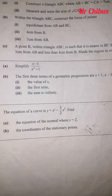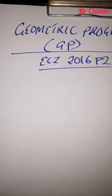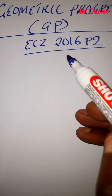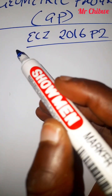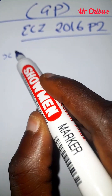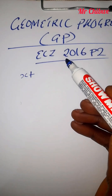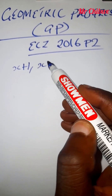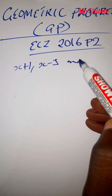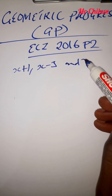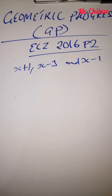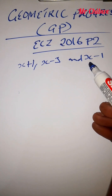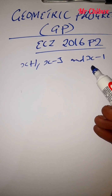So let's copy the progression of the terms that we are given. We have x plus 1, x minus 3, and x minus 1. We are asked to find the value of x at the first question, which is 3 marks.